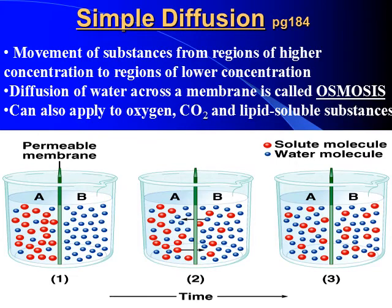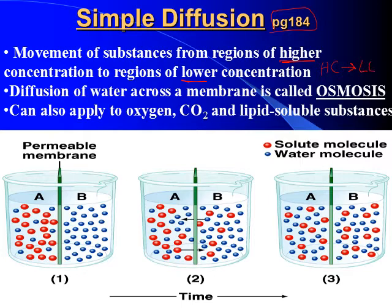Let's go over simple diffusion first. There's a nice diagram of it on page 184 of your textbook. Basically, simple diffusion is just the movement of substances from regions of higher concentrations to lower concentrations. Now, usually we're talking liquids, but it does apply to other things like gases as well. But it's always going from high concentration to low concentration. When this happens with water across a membrane, that has a very specific name — we call that osmosis.